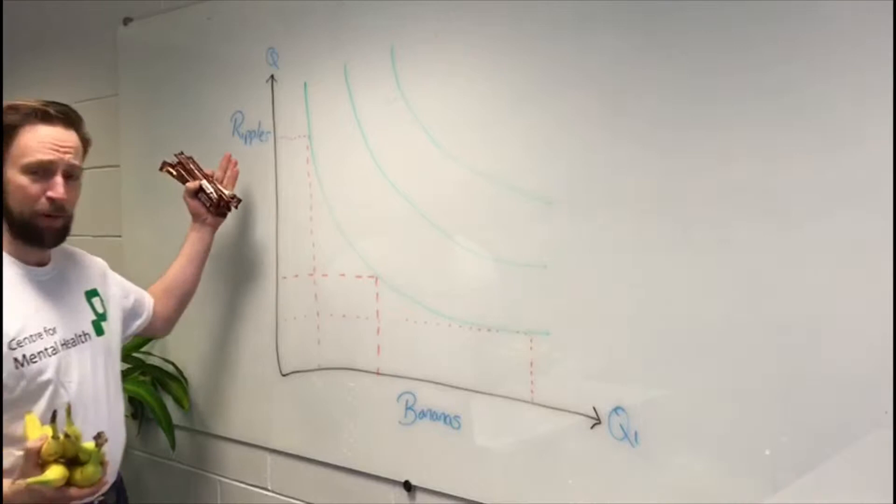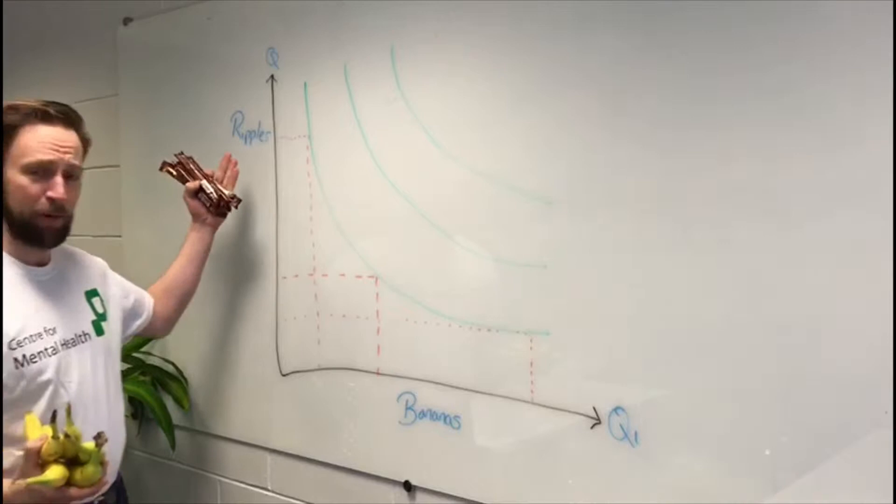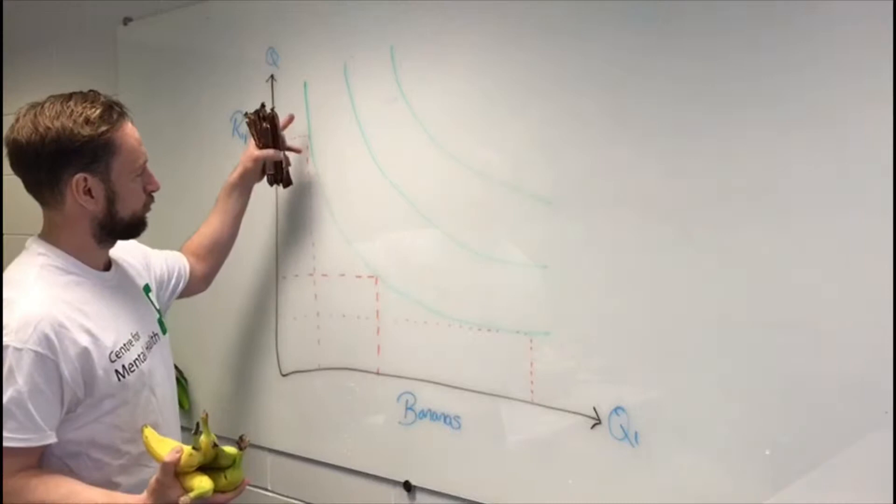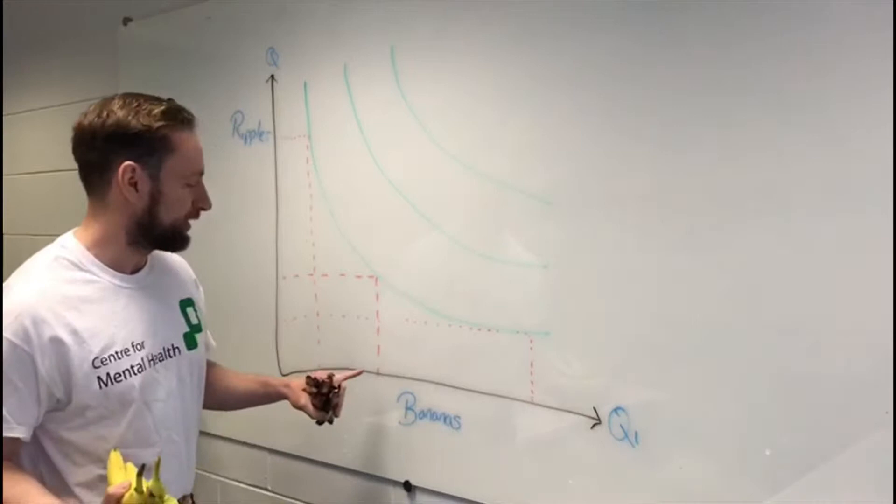If you put this onto a graph, which is what economists love to do, you can see that I've got ripples on the curve here, bananas on the line here, and in the middle are these green curves. What each one of these does is demonstrate the combination of ripples and bananas that you need to optimize your joy at any given point of resources.